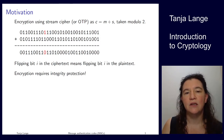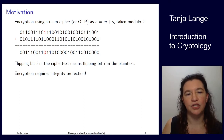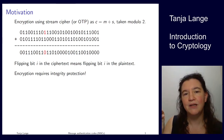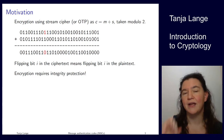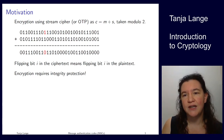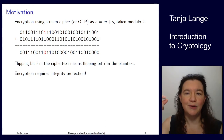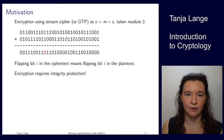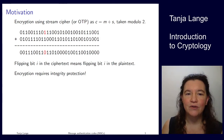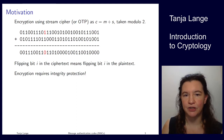So if Eve knows that this is a bank transfer and she knows exactly which position corresponds to the millions or something, she can flip a bit from 0 to 1 and change the data of what Alice actually wanted to transfer to Bob. So it is very important for encryption to have integrity protection.